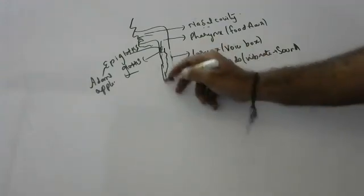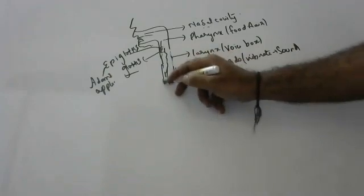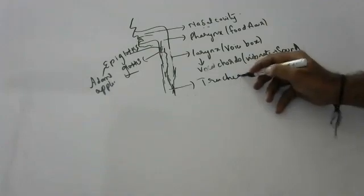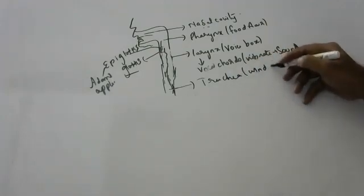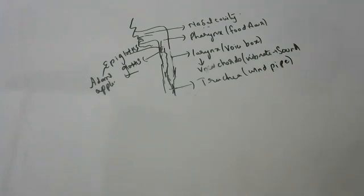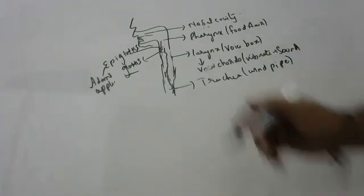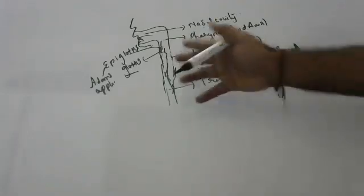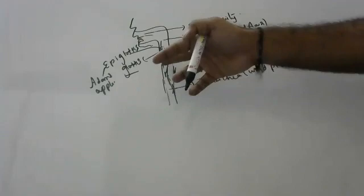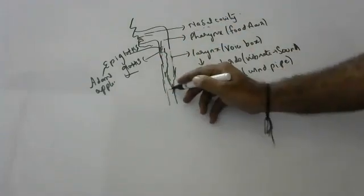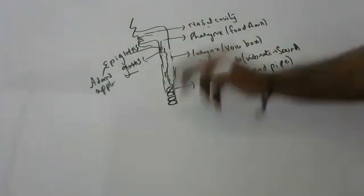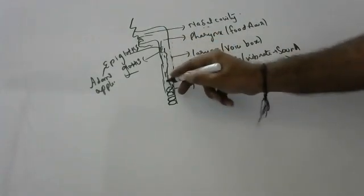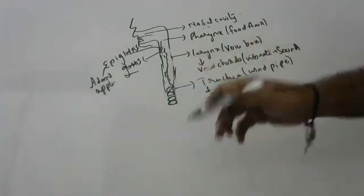From the larynx, air leads to the trachea. The trachea is famously called the windpipe. The larynx is in a collapsed state, but the trachea does not need to collapse. The esophagus goes from the back to the stomach, and the larynx leads to the trachea. To prevent collapsing, the trachea has C-shaped cartilaginous rings.